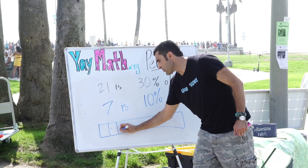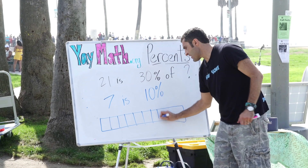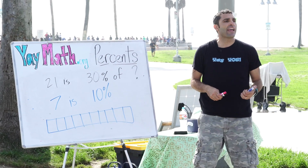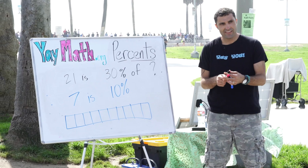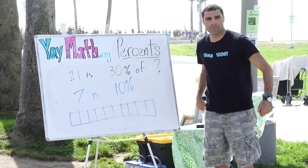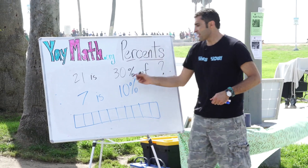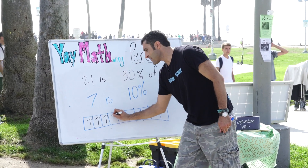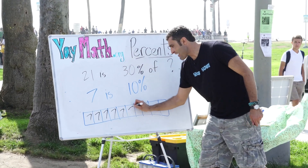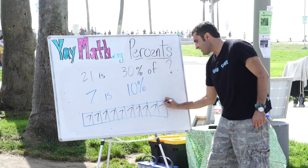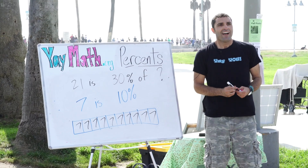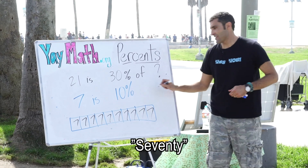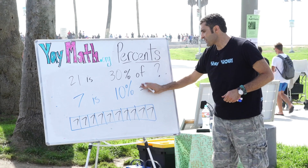So it's a renewed problem: seven is 10 percent. One, two, three, four, five, six, seven, eight, nine, ten — there it is. So seven is 10 percent, that means: seven, seven, seven, seven, seven, seven, seven, seven, seven, seven. How much is that? 70 — that's right, of 70.